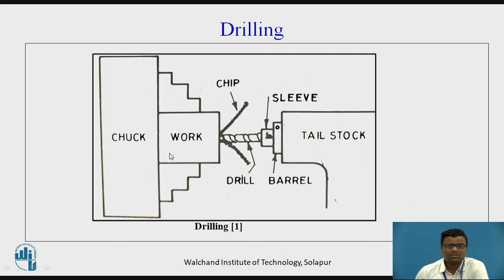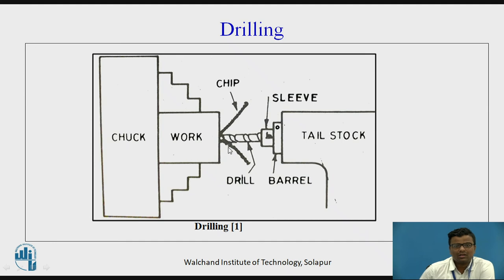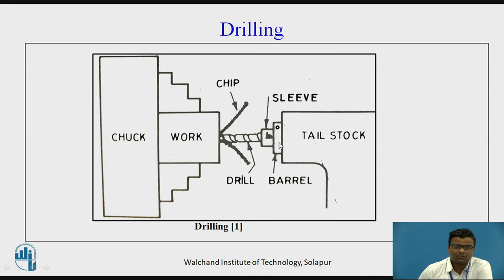Now we will move to the drilling operation. The cylindrical workpiece is fixed in a 3-jaw chuck or 4-jaw chuck in the headstock. The tailstock has a barrel and sleeve where the drill tool is fixed. The tip of the drill is touched to the workpiece at the center, and then the drilling operation is performed. To take the drill inside the workpiece, we use the hand wheel manually. The desired depth of cut — say 3 mm or 4 mm — is marked on the drill tool.